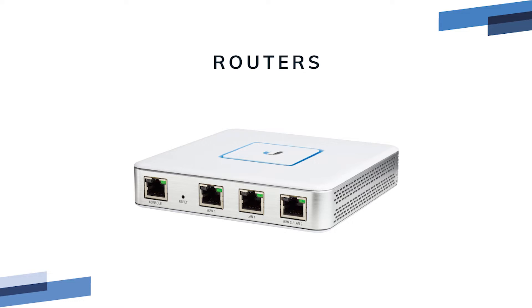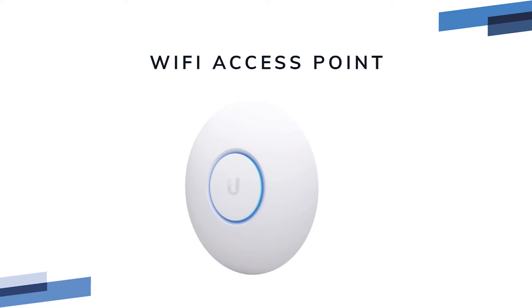Wi-Fi access points are a relatively newer part of the networking family. They replace LAN cables with a two-way radio — that's why signal quality is a concern. Wi-Fi access points must be placed in proximity to the devices they are connecting to, with consideration for signal strength and interference. We'll discuss this more later in the video when we talk about network planning.